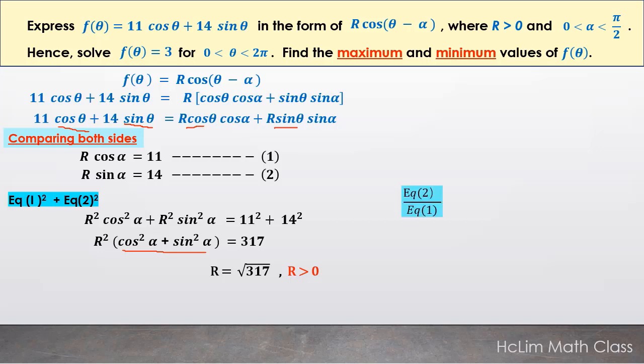If we divide coefficient 2 by coefficient 1, we have R sin α over R cos α = 14/11, so tan α = 14/11. We find the basic angle of α to be 0.905 radians. Since the given range is in radians, we leave the final answer in radian form.